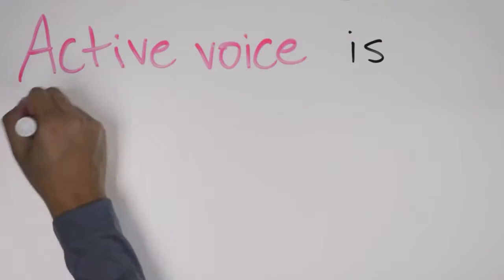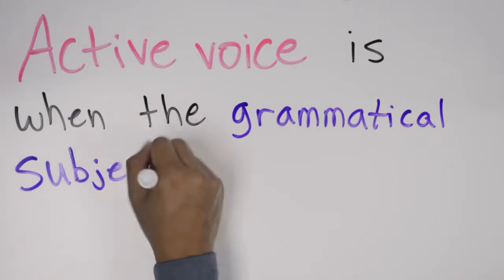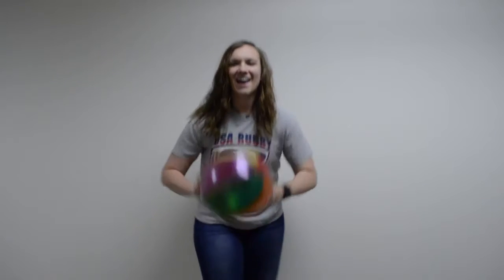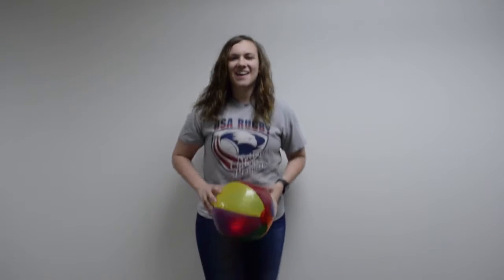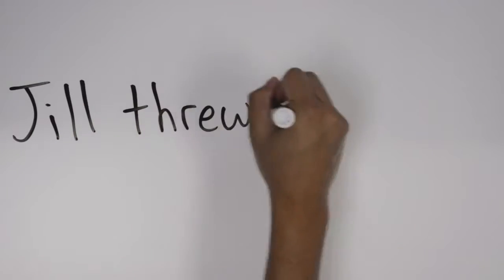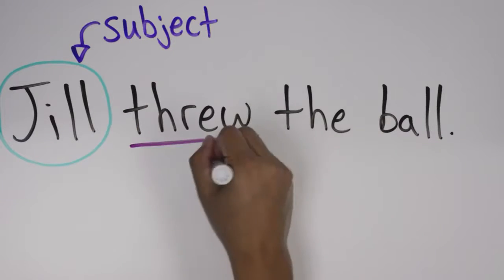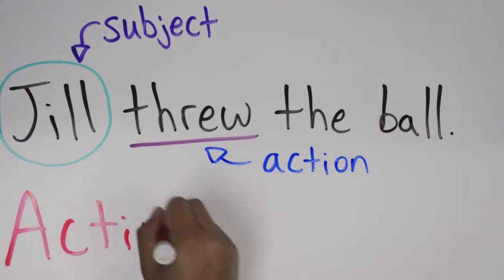Active voice is when the grammatical subject of the sentence is performing the action. Let's say you saw your friend Jill throw a ball. You could say, Jill threw the ball. Here, the grammatical subject of the sentence, Jill, performs the action described by the verb throw. This is an example of active voice.